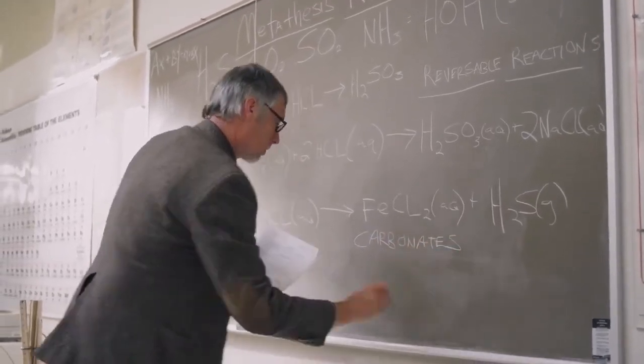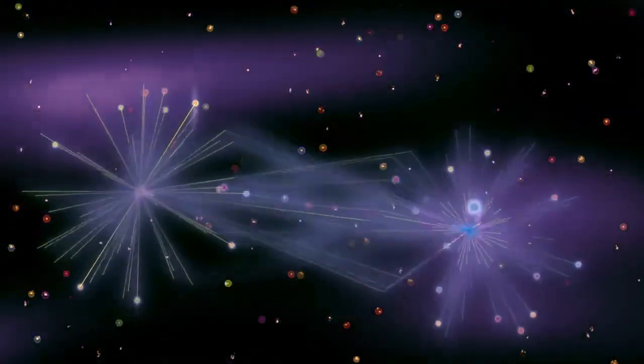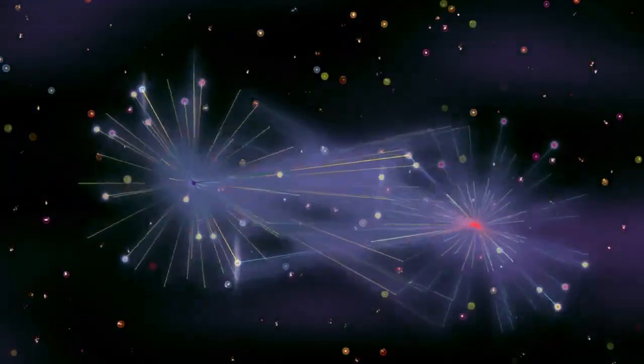Then there's the Higgs field, which Tong compares to molasses spread throughout the universe. The Higgs field gives mass to other particles, stopping them from moving at the speed of light. Tong notes that this comparison is not perfect because it suggests friction, while in reality, different particles interact with the Higgs field in various ways.